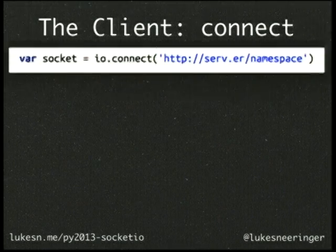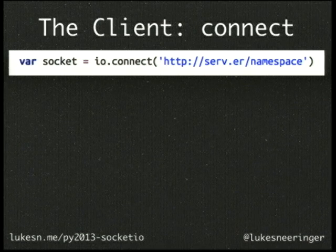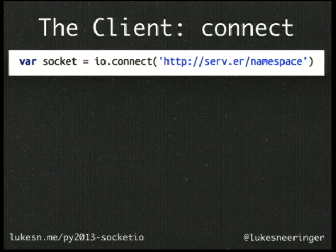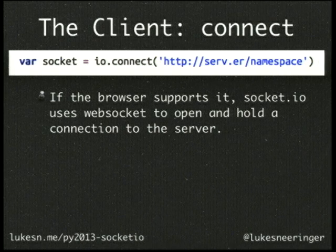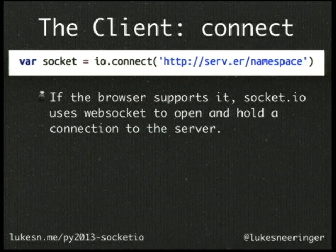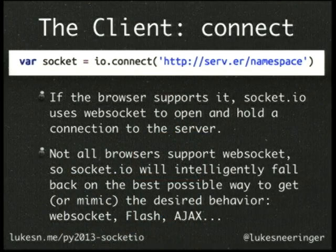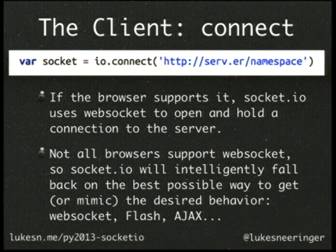Here's how to connect to a server. The Socket.io JavaScript library will make IO into a global variable, and then you just connect to your server slash your namespace. If your browser supports it, it uses a technology underneath called WebSocket to open and hold a connection. If it doesn't, it does a degrading situation where it tries the next best thing — it will try Flash if installed, then long polling, then Ajax polling if it has to. So it will mimic the desired behavior without you having to worry about it, and Socket.io works out of the box on every remotely reasonable browser.